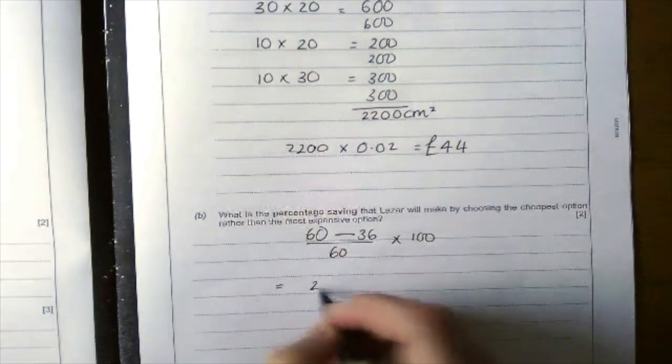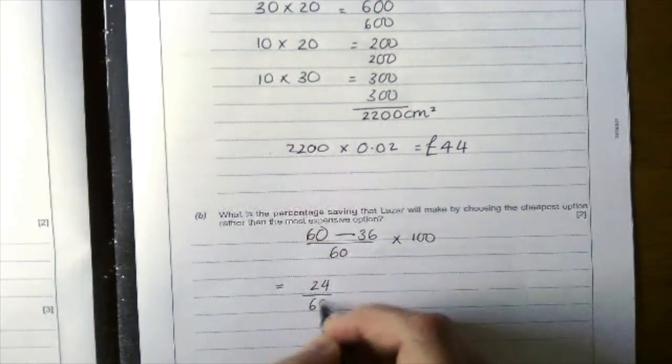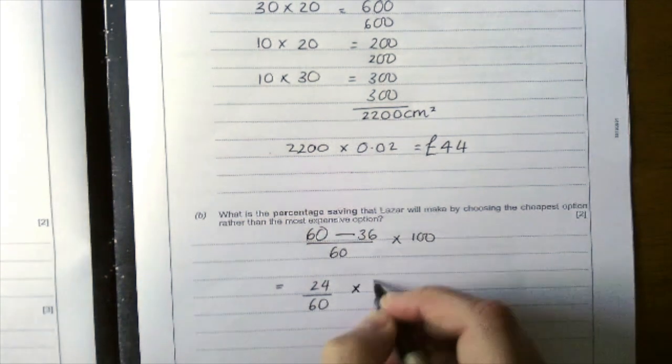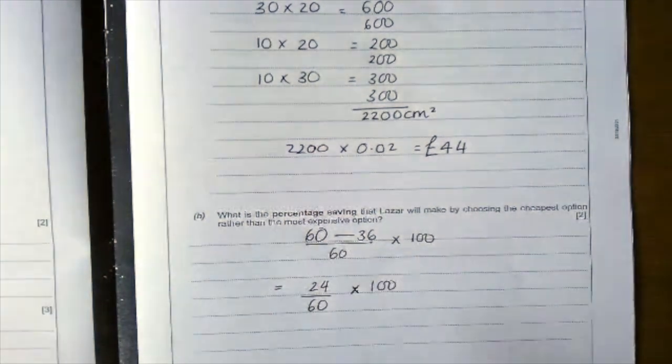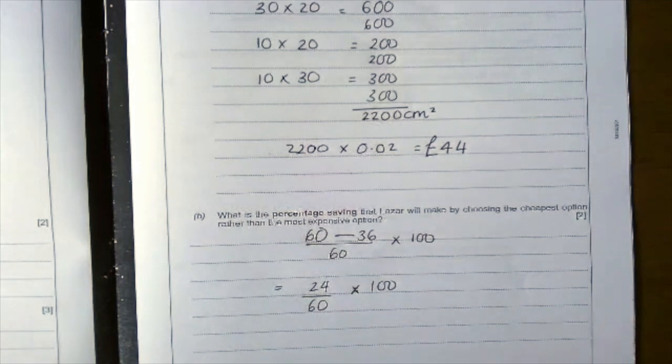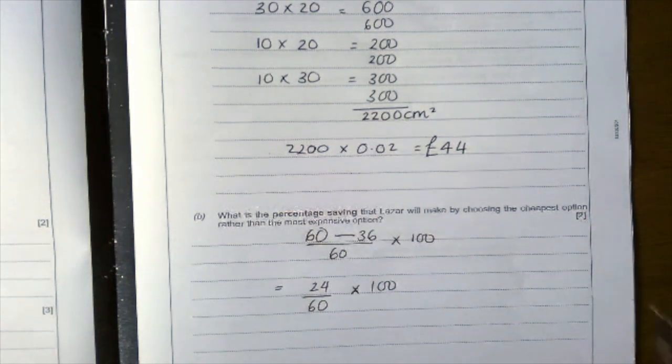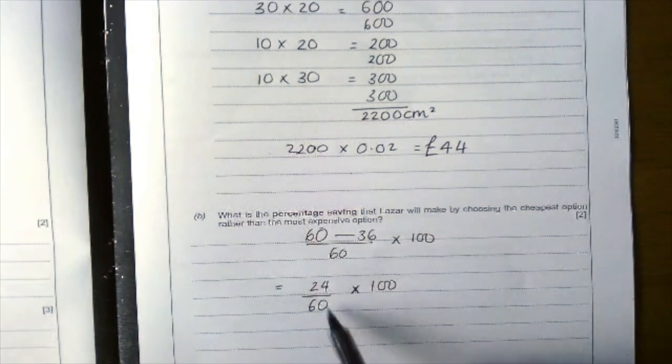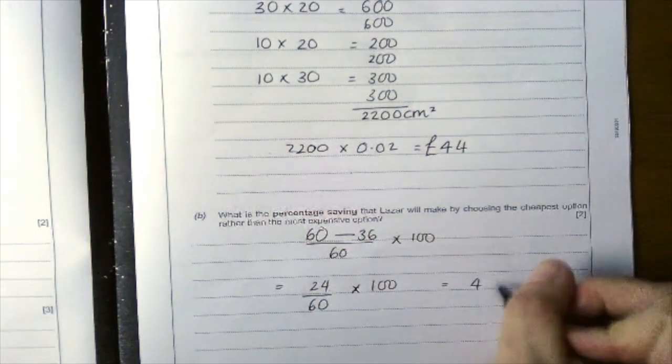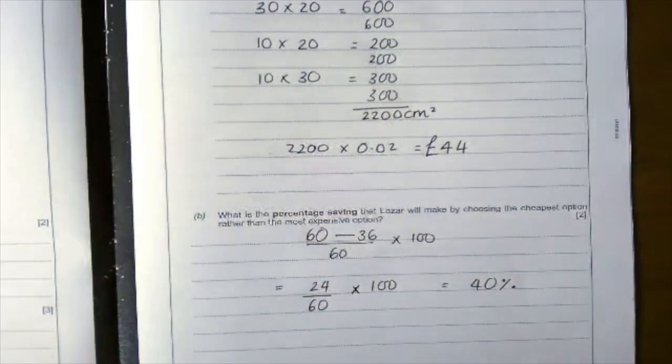60 take away 36, 24 over 60 times 100. Now how many 6s are in 24? Well there are 4. So this is 0.4 and you times by 100. So it's 40%.